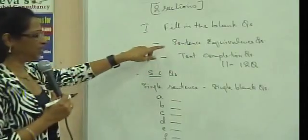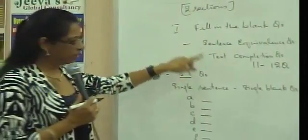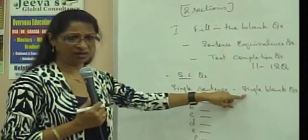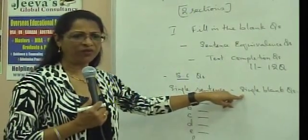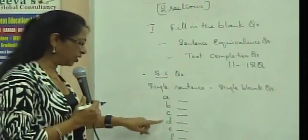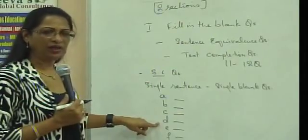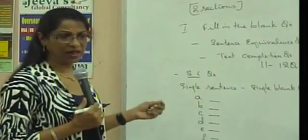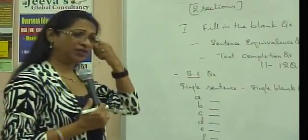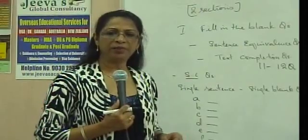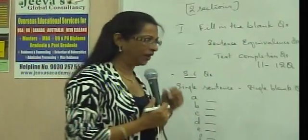This particular question is called a sentence equivalence question because for this single blank, the test maker wants you to select two answers which are equally appropriate for the blank. If you were to select option A for the answer, then you will also have to select option D or E or F or whichever you think is the correct answer. The challenge here is for you to get your answers right, both the options you select must be precise and perfect for the blank.